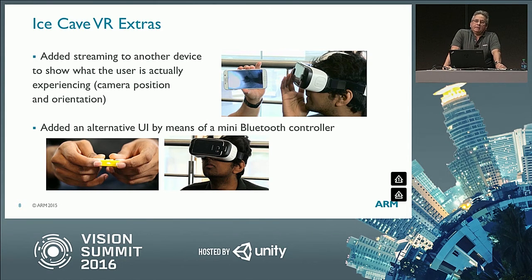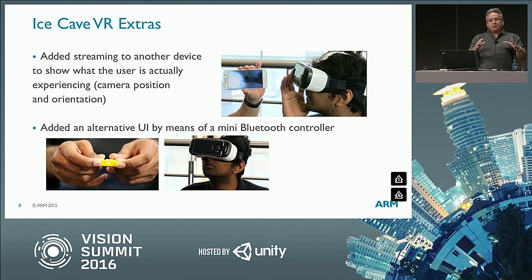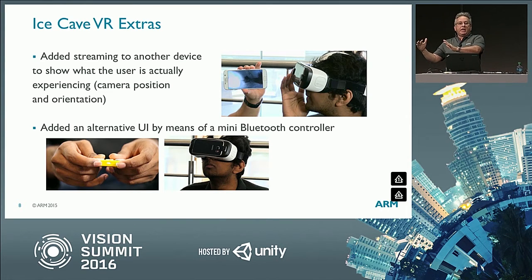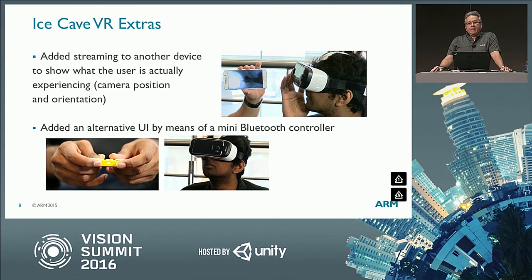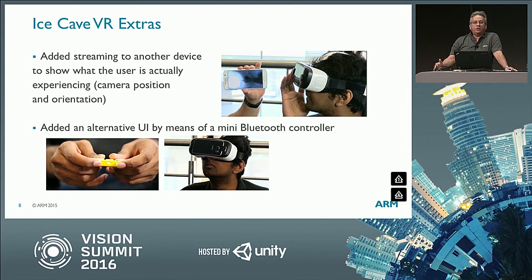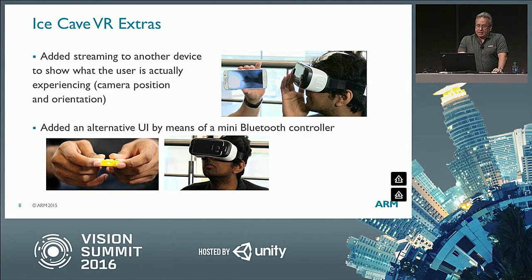What we did: if you try to just stream the full frame buffer, it's just unthinkable. What we do is run the VR application on the headset and run a non-VR version of the application on a second device. We just stream every frame the camera position and camera orientation - six floats. That's all you need to replicate the camera motion in the non-VR application. Many people try to stream the full frame buffer - you don't need to do that. We are working with a mobile device where we need to carefully balance all the runtime resources. My student also implemented an alternative UI using a mini Bluetooth controller, and it worked very fine.